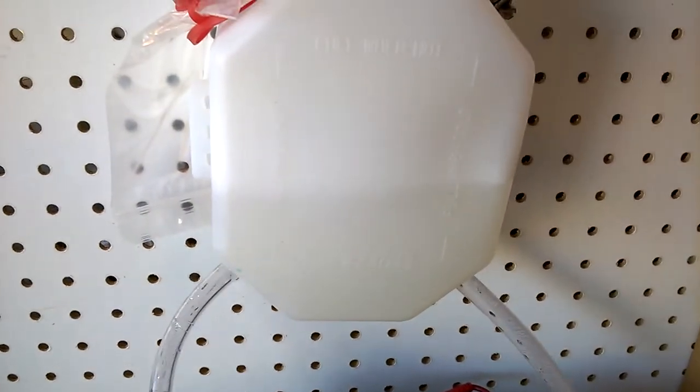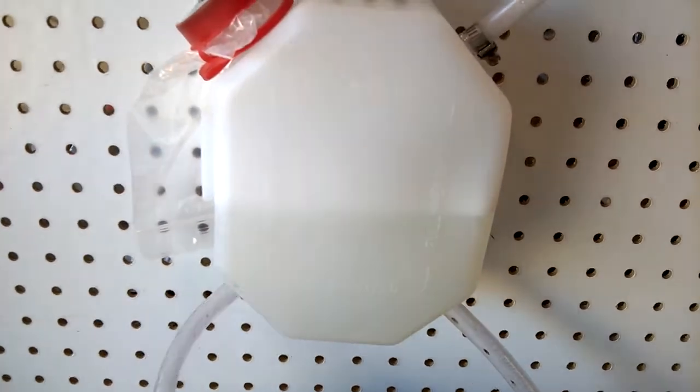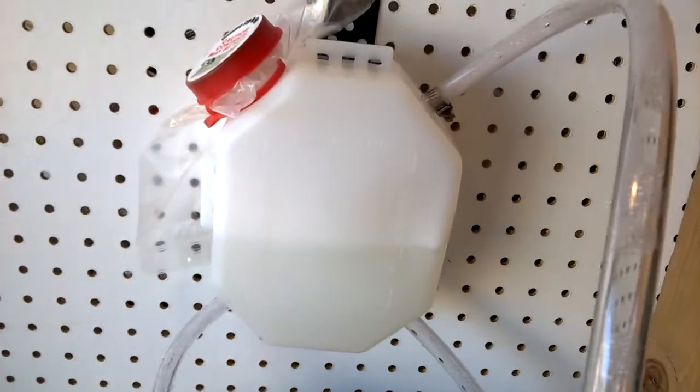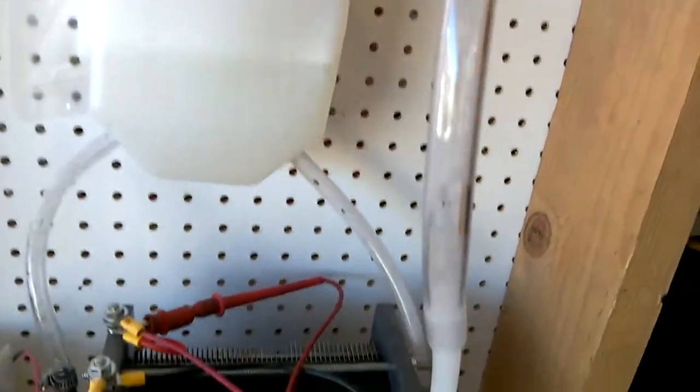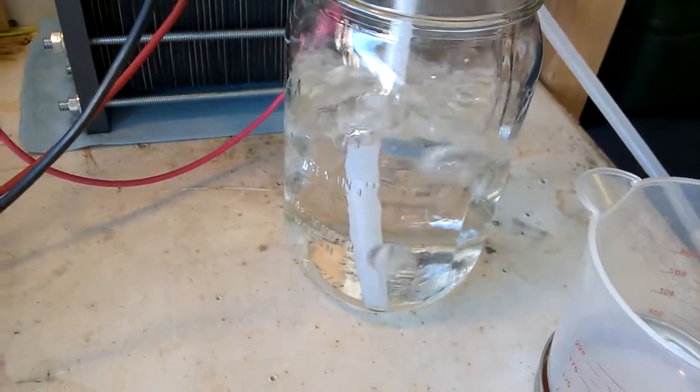This is a bubbler that I made from a radiator overflow from O'Reilly's for eight bucks apiece. I just couldn't go wrong trying it. I got that coming out, I got it coming down through here.